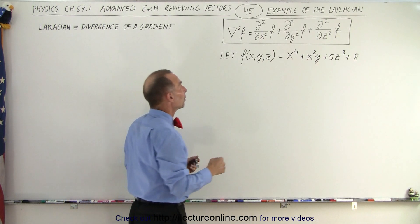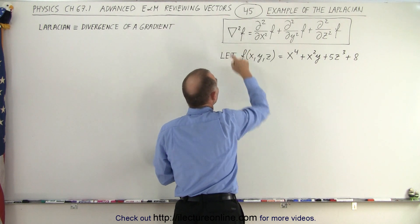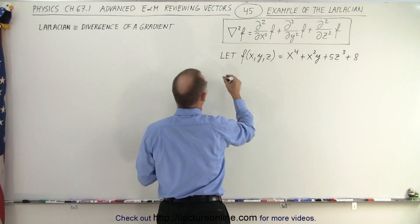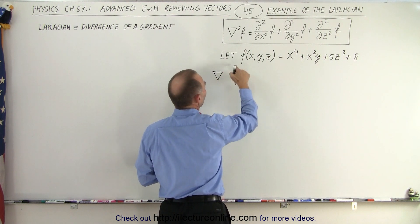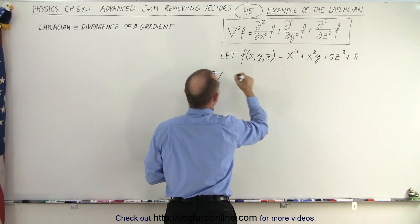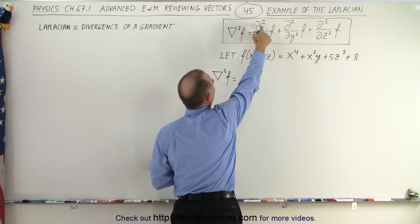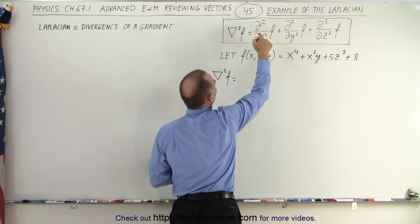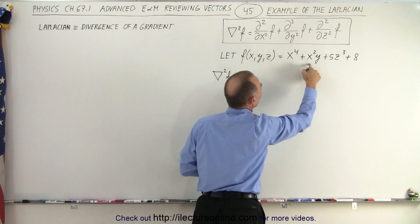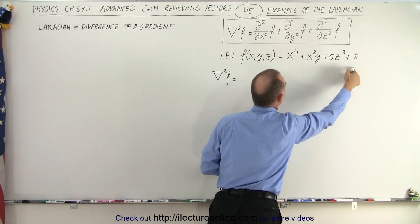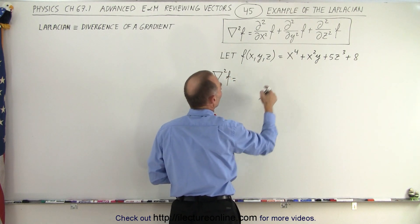So now what we're going to do is notice that the Laplacian of the scalar function, which we have defined right here, is going to be equal to the second partial derivative with respect to x of every term in the function. So first we do it with respect to x.